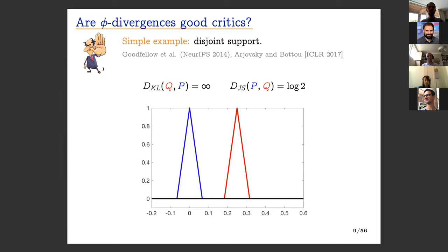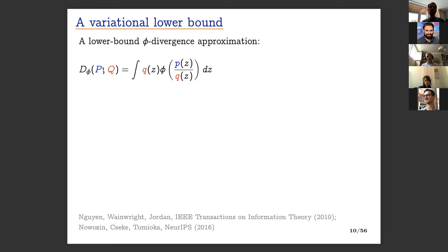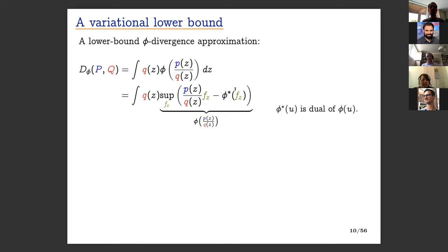This setting of disjoint support is actually very common — for example, when generating images, they occupy a low-dimensional submanifold in a very high-dimensional pixel space, and the intersection of the two supports is almost certainly measure zero. So it seems like a dead end — yet φ-divergences are by far the most common basis for divergence measures in GANs. What people do in practice is not use the φ-divergence directly, but a lower bound on it.